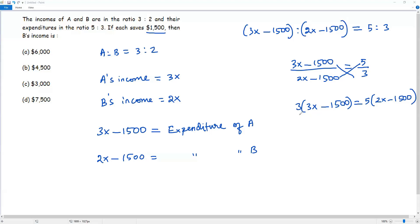Now I can distribute the 3 to 3x and 1500, then I'll be getting 9x - 3 times 1500 is 4500. So 5 times 2x is 10x. If I distribute 5 to negative 1500, it will be negative 7500.